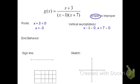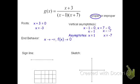To find the vertical asymptotes, we'll find where the bottom would be undefined, where it is equal to 0. Therefore x minus 1 cannot be 0, and x plus 7 cannot be 0, which means x cannot be 1 or x cannot be negative 7. Therefore the vertical asymptotes are x equals 1 and x equals negative 7. Because it's a proper rational function, we know that the end behaviors will both go towards 0. That means as x goes to negative infinity, f of x is going to 0, and as x goes to positive infinity, f of x is still going to 0.